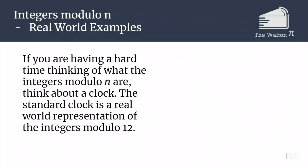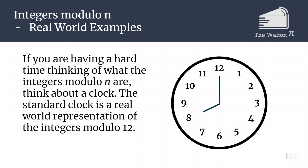If you're having a hard time thinking of what integers mod n are, you can always think about these as a clock. You can think of our clock in the real world as a representation of the integers mod 12, where as you go around the clock, we are just going to keep cycling back through the different entries.